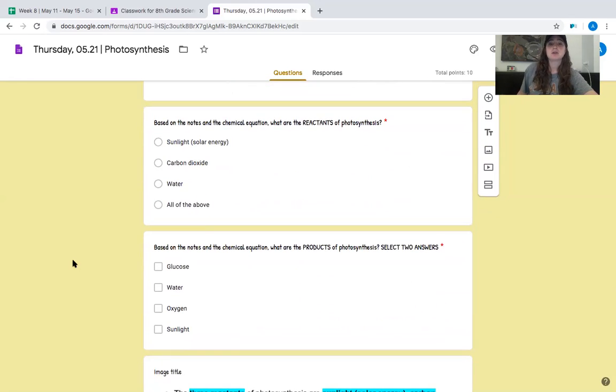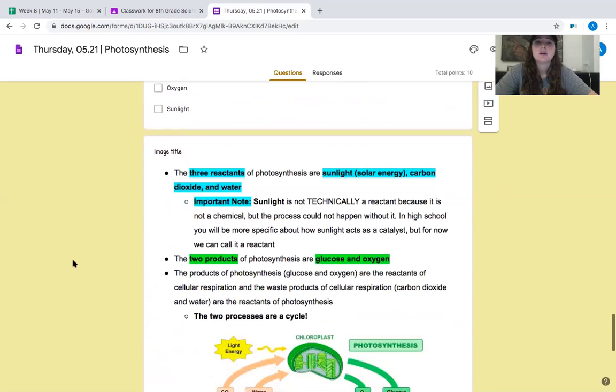Based on the notes in the chemical equation, what are the products of photosynthesis? Select two answers. So what are the two products or the two things that are produced during photosynthesis? Select them as I read them if you think it's the answer. Glucose, water, oxygen, sunlight. All right, you should have checked glucose and oxygen because those are the two things that are made during photosynthesis, and they're the two things that come after the arrow in the equation. We're going to keep going.